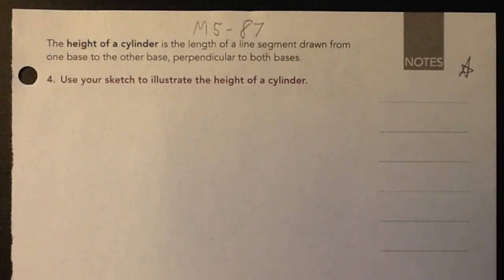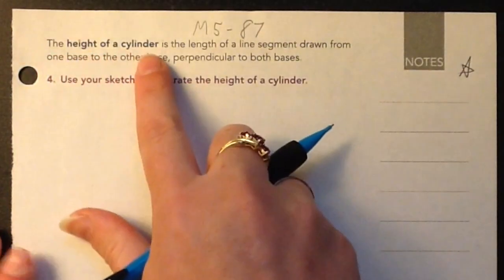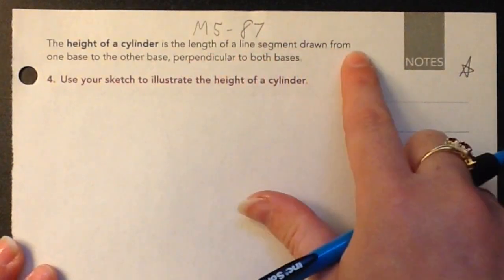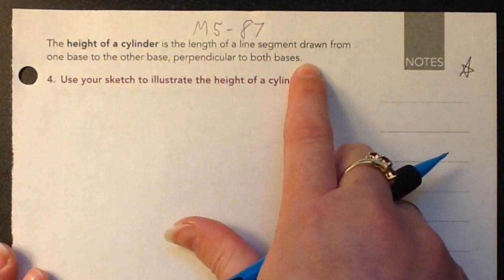All right, this is M587. So it says the height of a cylinder is the length of a line segment drawn from one base to the other base perpendicular to both bases.